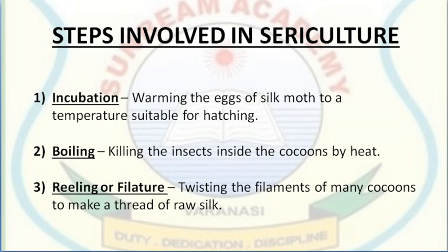After hatching, silkworms are fed on freshly chopped mulberry leaves. The worms eat almost continuously and increase in size. At the end of this period, they are ready to spin their cocoons. Branches of trees or shrubs are placed in their rearing houses; the worms climb these branches and make their cocoons out of one continuous thread, taking about 8 days — this is called spinning of the cocoons.